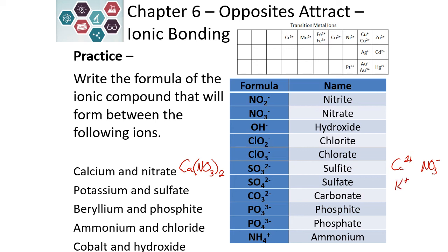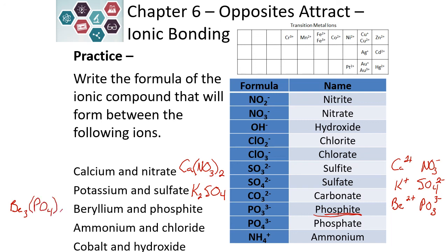Potassium is a plus one charge. Sulfate is a minus two charge. So in this case, it's going to take two potassiums to balance the charge of the sulfate — no parentheses required, giving us K₂SO₄. Beryllium is a plus two. Phosphite, PO₃³⁻, has a negative three charge. So our formula for beryllium phosphite is Be₃(PO₃)₂, with parentheses and a two on the outside. Ammonium is NH₄⁺ and chloride is Cl⁻, so we just need one of each: NH₄Cl.